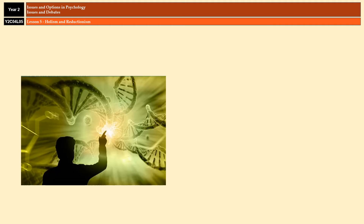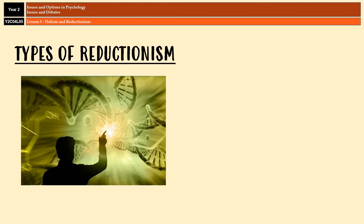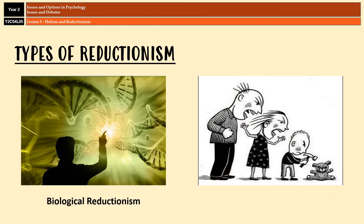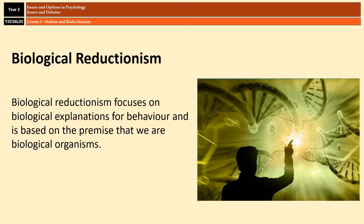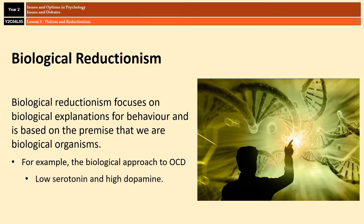Alongside the Levels of Explanation, you also need to know specific types of reductionism, such as biological and environmental reductionism. Each type is generally associated with a particular approach in psychology. Biological reductionism focuses on biological explanations for behaviour, based on the premise that all behaviour is at some level biological and can be explained through genetic, evolutionary, neurochemical, or neurophysical factors. Biological reductionism features in the biological approach and has been successfully applied to various areas, for example the investigation of psychological disorders at a neurochemical level has led to the creation of biological treatments for conditions such as depression, OCD, and schizophrenia.